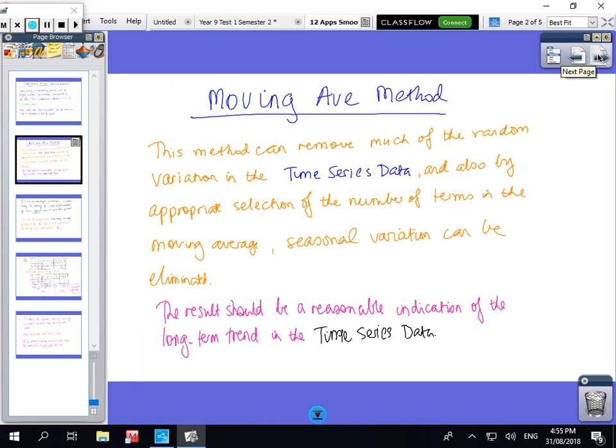In the moving average method, this method can remove much of the random variation in the time series data. By selecting an appropriate number of terms in the moving average, sometimes we can get rid of the seasonal variation.